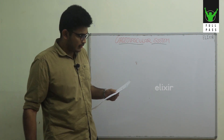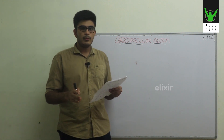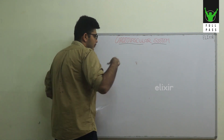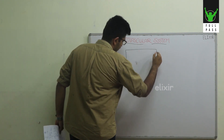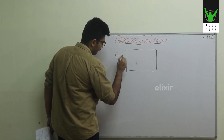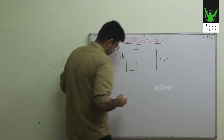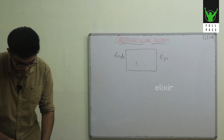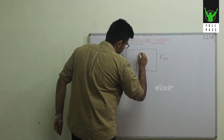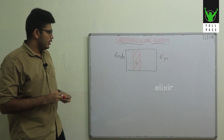The first question: the subendocardial portion of the left ventricle is more prone to ischemia as compared to the other parts. Let's look at the myocardium — this is your myocardium cross-section. This is the endocardium, this is the epicardium, and the subendocardial portion is represented here in red. So why is this portion more prone to ischemia?